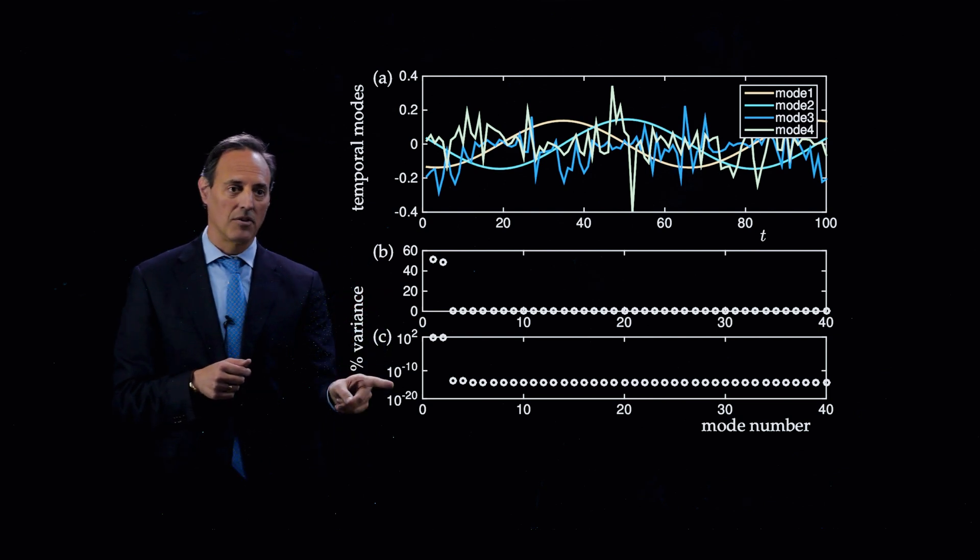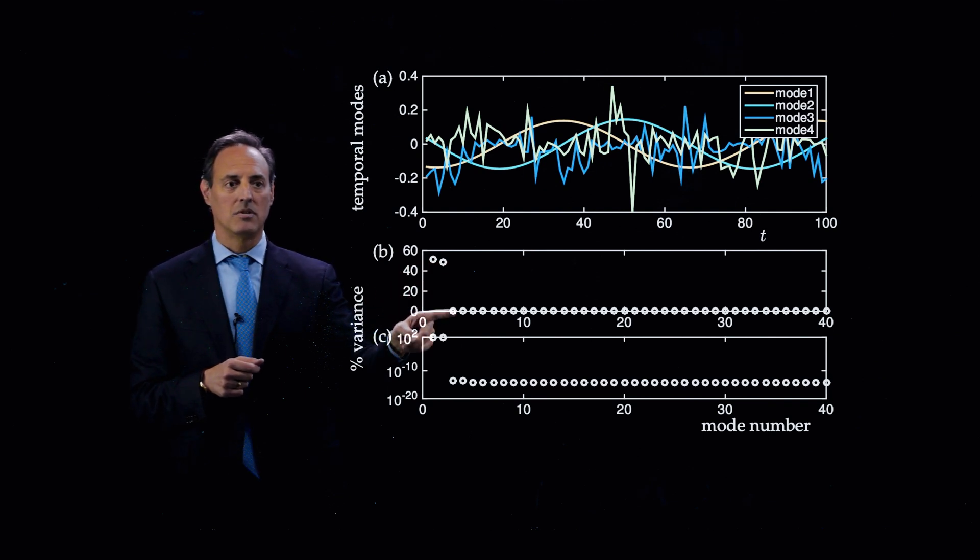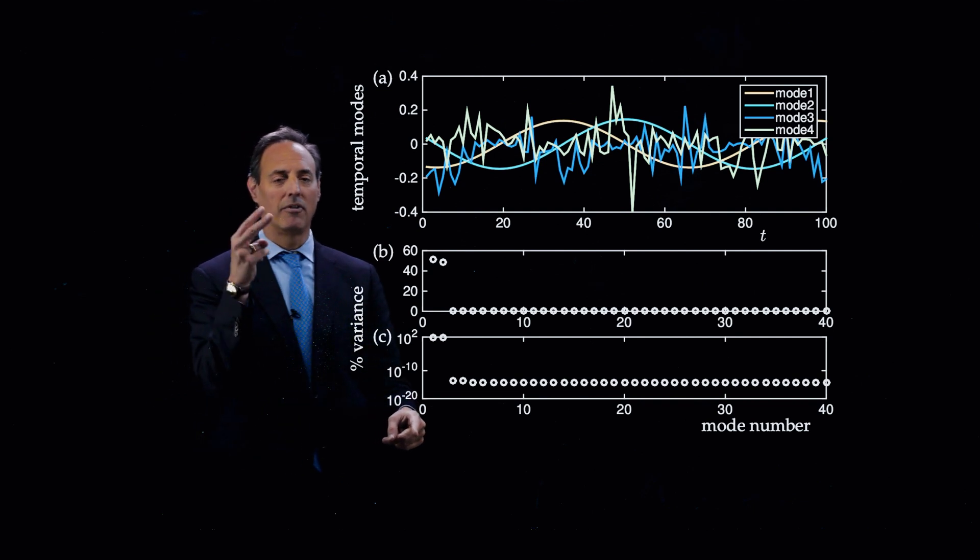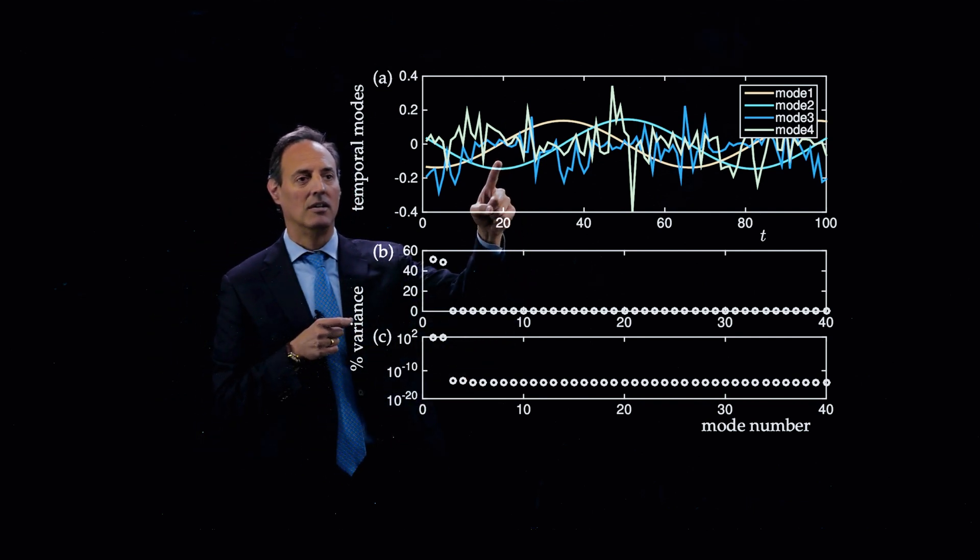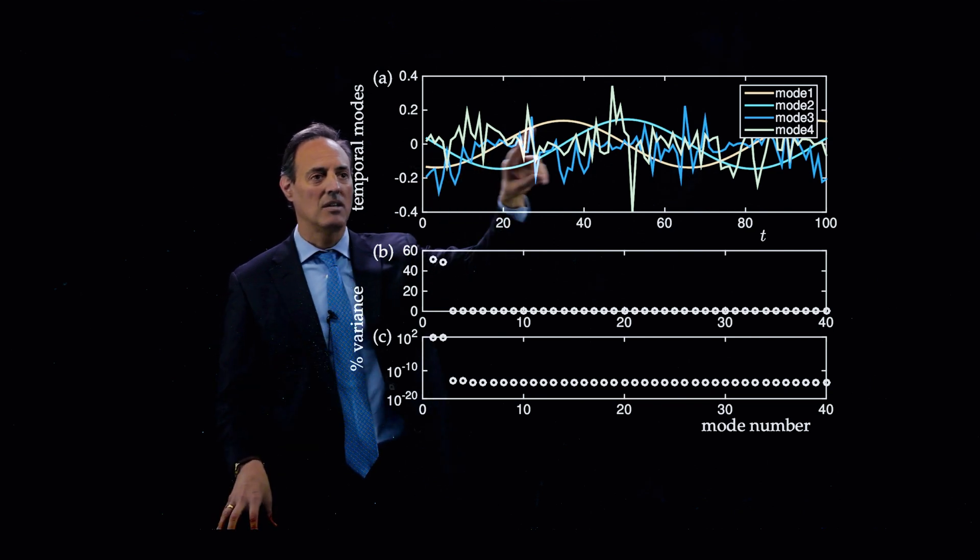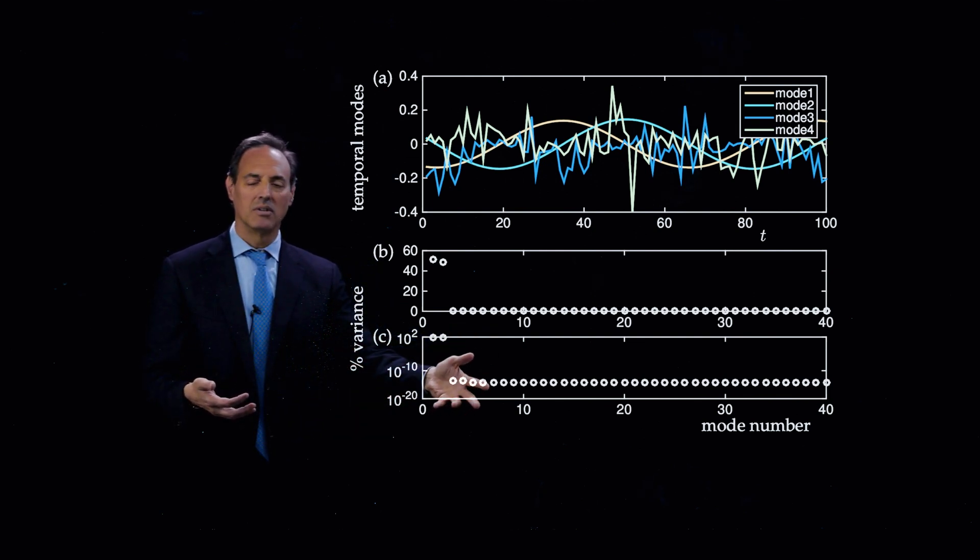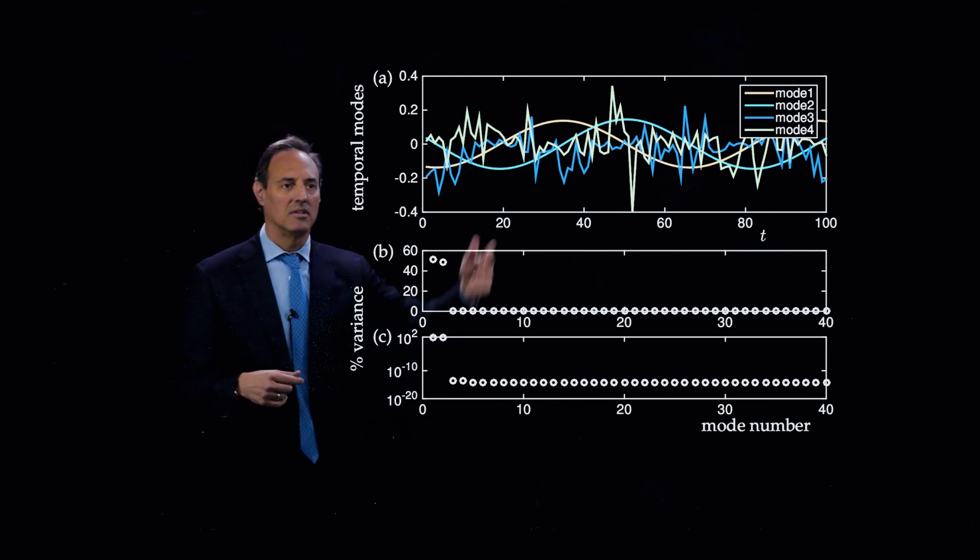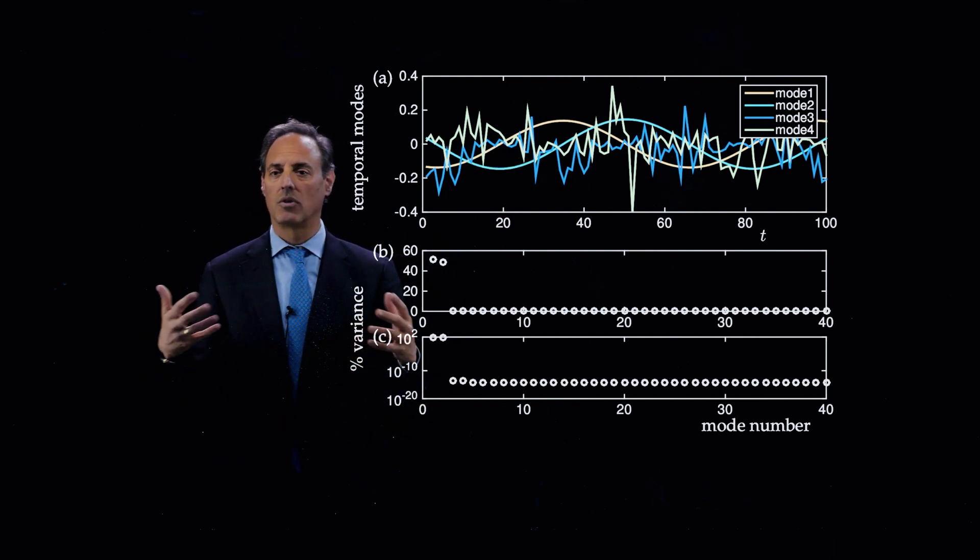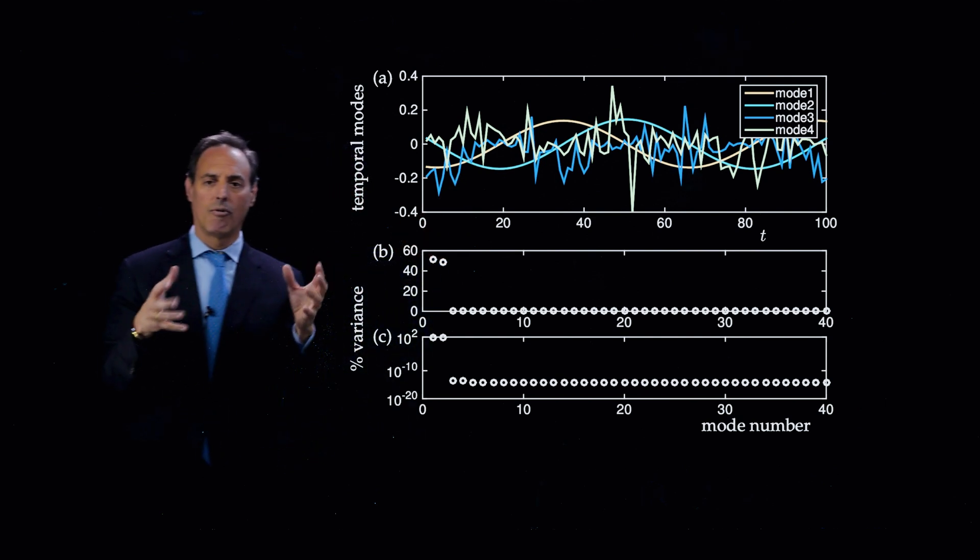If you take a long time snapshot of this thing and you do the SVD, this is a singular value spectrum and this is on a log scale. Look at this. It's almost perfectly two modes. There they are. The two modes, they're down here. You might think, well, how much energy, how much variance is really there? And look at this, down to 10 minus 16. So it's down to numerical round off. It's almost perfectly two modes. And what are they doing? Here they are. They're oscillating against each other. Mode one and two are this orange and cyan. And the rest of this is numerical garbage.